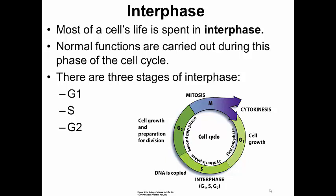There are three stages to interphase. G1, which stands for growth 1, in which the cell increases in size. S, the second phase of interphase, in which the DNA is synthesized. And G2, in which the cell continues to grow and duplicates organelles in preparation for cell division. Then, following the conclusion of interphase, the cell goes into mitosis.